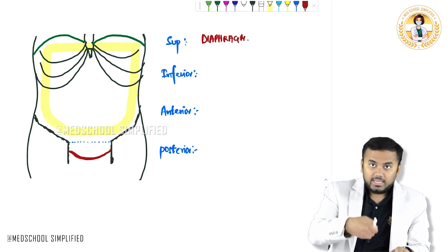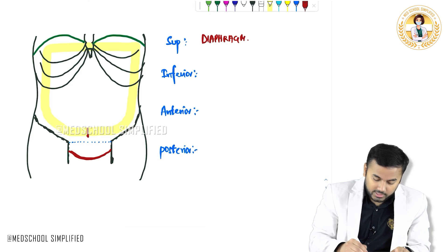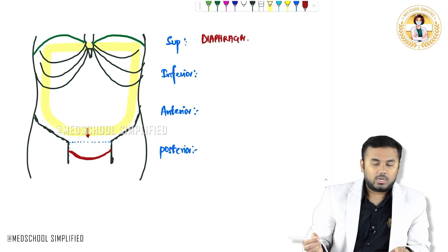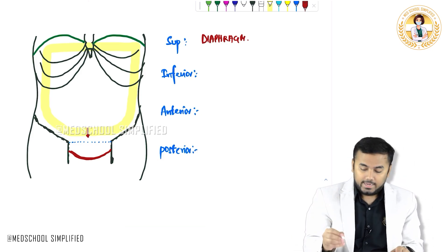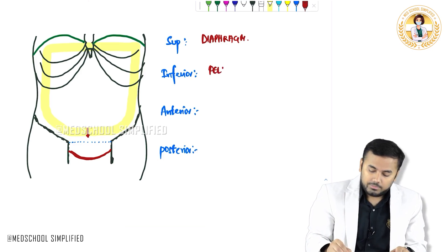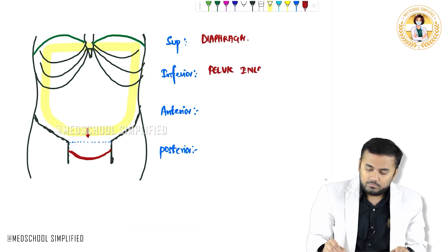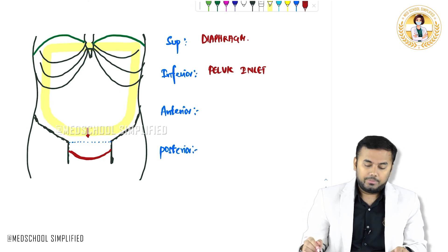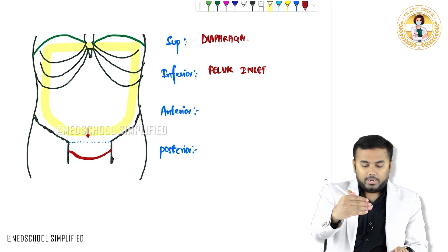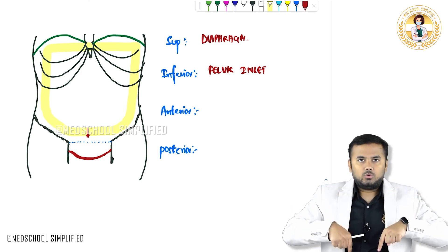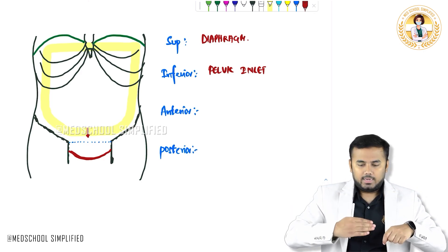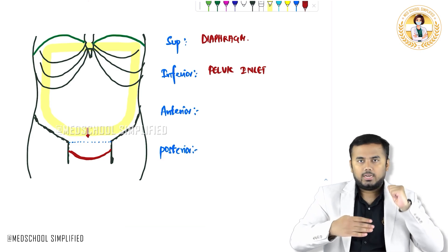Next important thing — inferiorly, what do you have? Inferiorly, you have this dotted line. This dotted line represents the pelvic inlet. So inferiorly you have got the pelvic inlet. On the top you have got diaphragm, down you have got pelvic inlet — anteriorly and posteriorly.